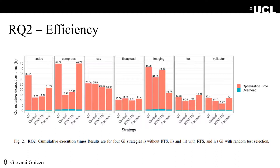This figure shows the cumulative cost of our experiments in hours of running time. In our specific case, GI without RTS used over 180 CPU hours to complete the experiments. For the same experiments, this time was reduced to 114 and 118 hours when using Ekstazi or STARTS respectively. This is an average reduction of 64 hours of computational time — two and a half days — which is more than a third of savings compared to the total cost of GI without RTS.